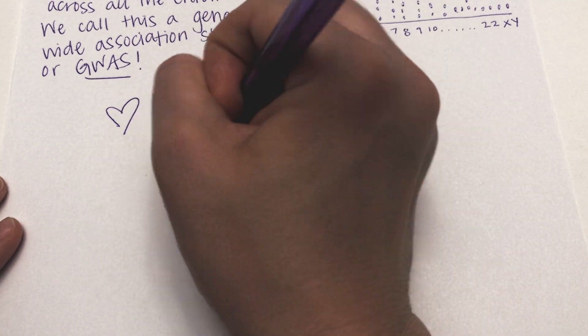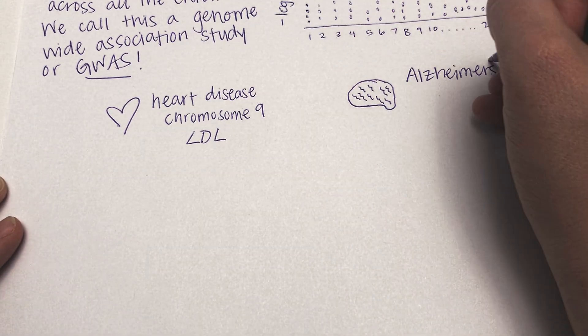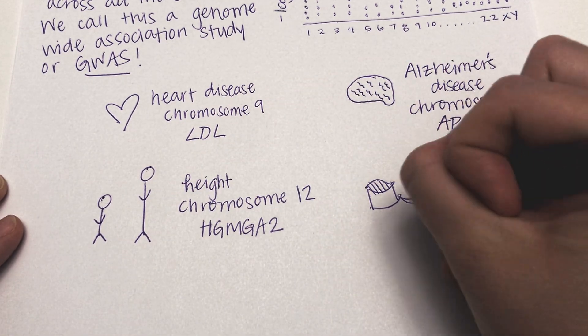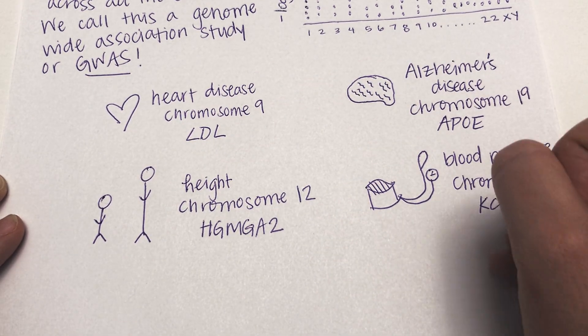We can perform genome-wide association studies for diseases like heart disease and Alzheimer's disease or for quantitative traits like height and blood pressure.